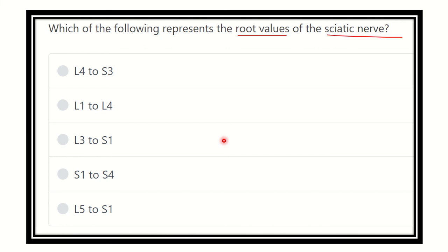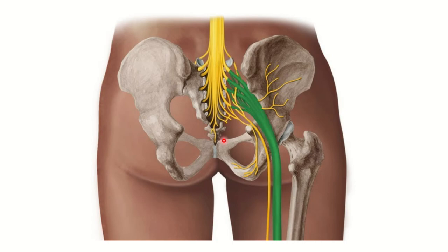Let's see the sciatic nerve here. We can see the sciatic nerve — the green one — and we can see it arises from these nerve roots which lie in the sacral region and some part of the lumbar region also.